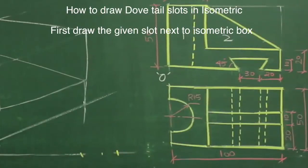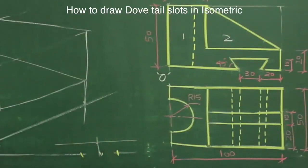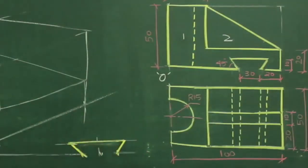Now see this. First, we will draw the given orthographic view. We'll mark the 30 midpoint, take 10 up, draw a line, and draw 45-degree lines. I will draw the same dovetail slot and mark distance x.